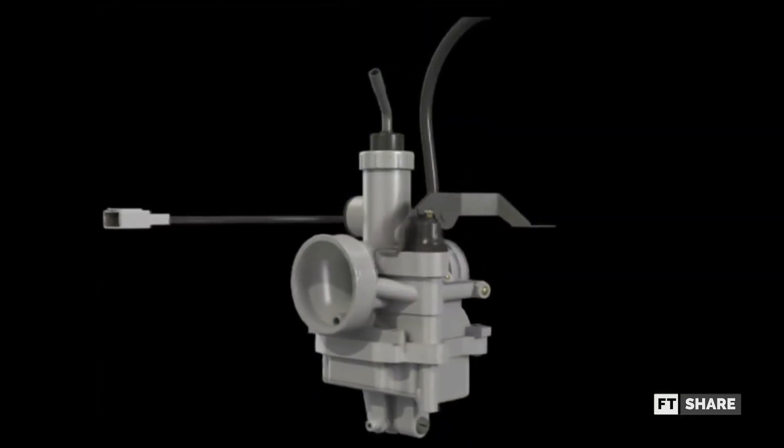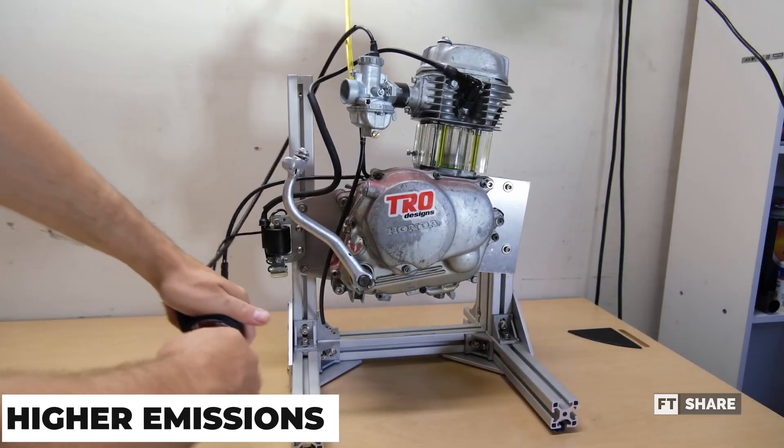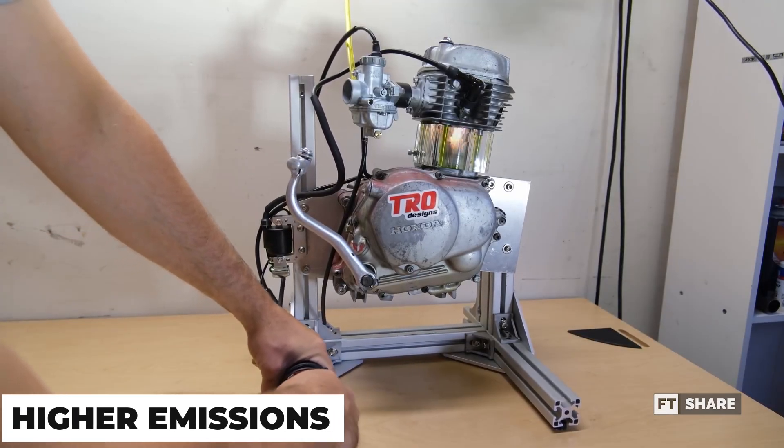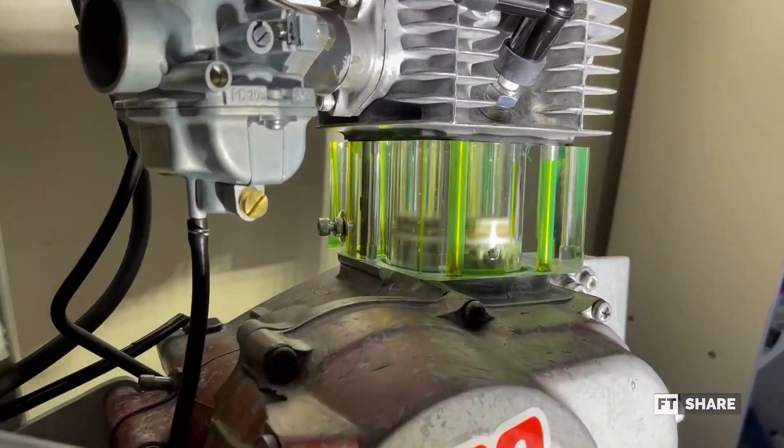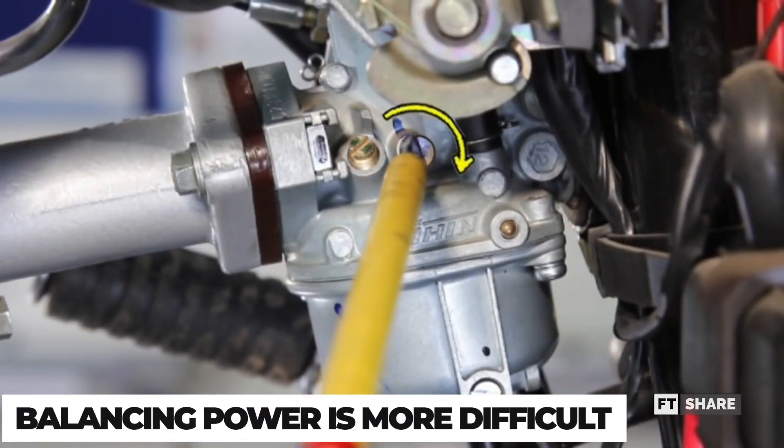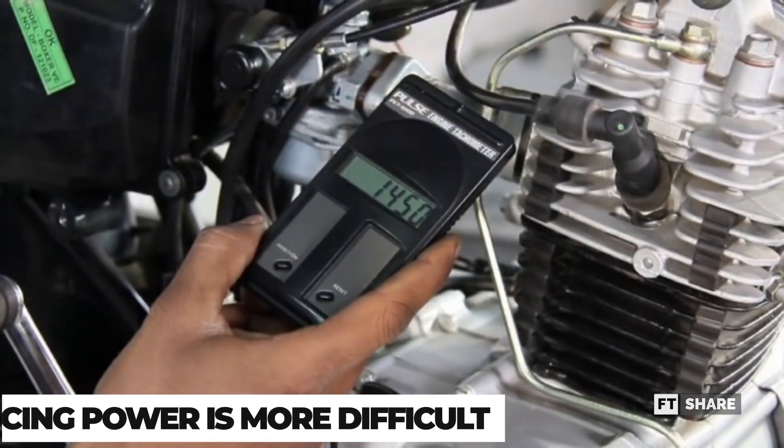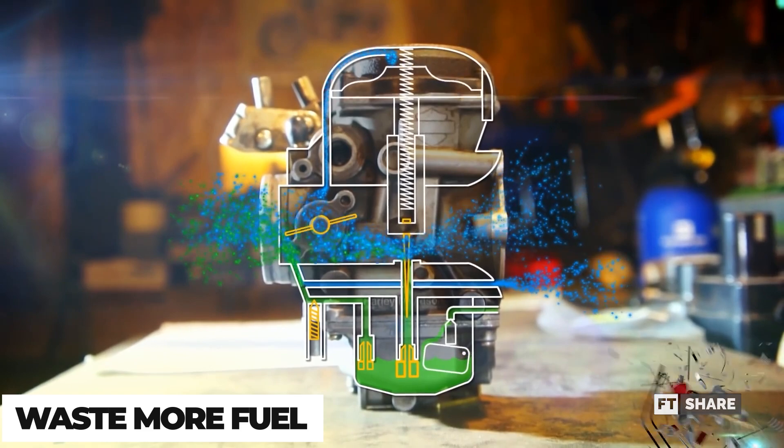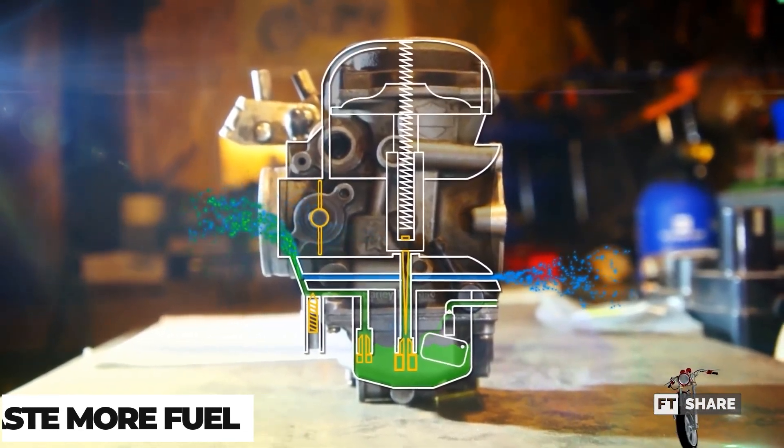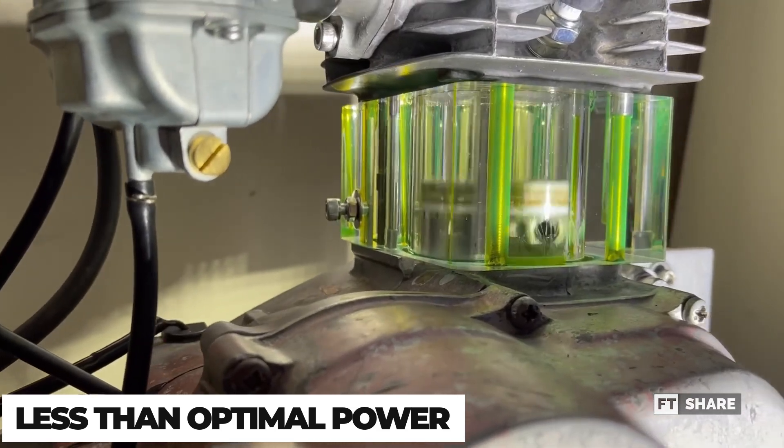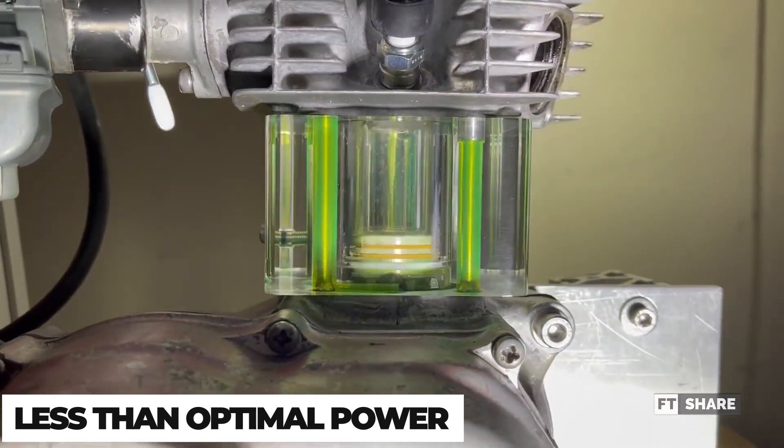As for the disadvantages, first, the exhaust emissions tend to be higher. Usually, the exhaust will be dirtier and certainly cause irritation to the eyes. Second is that it's harder to find the right balance between power and fuel efficiency. Third is that it tends to waste more fuel compared to injection under the same standard conditions. And fourth is less optimal power in some engine speed conditions because the carburetor settings are fixed.